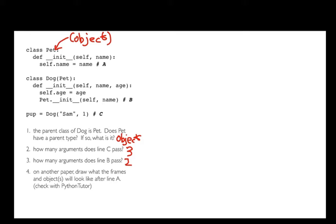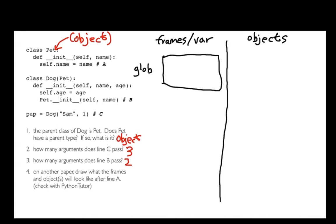Fourth question, the most complicated: on another piece of paper, what do these frames look like as I'm basically running this code? Let's take a crack at that. The first thing I really like to do when tracing through code like this is I like to draw a boundary and on the right, I'm going to have my objects. I have objects over here and then on the left, I have frames.